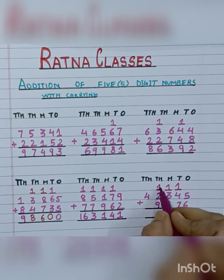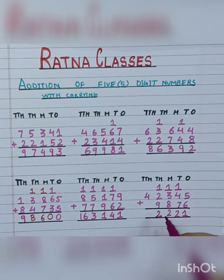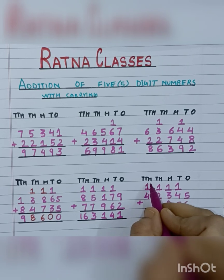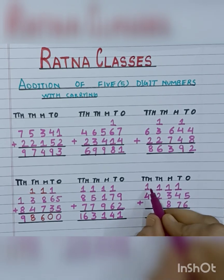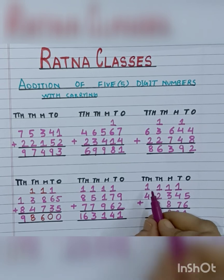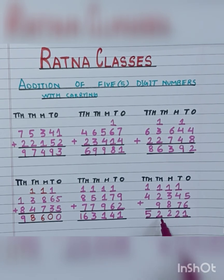Now 1 carry plus 2 is 3, and 3 plus 9 is 12 — write 2 and take 1 carry at the ten-thousands place. Since 9,876 has no ten-thousands digit, we just add: 1 carry plus 4 is 5. Our answer is 52,221.